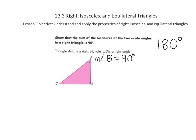When I use that notation, the M stands for the measure, and then this is the angle symbol, and then B for the angle. So the measure of angle B is equal to 90 degrees. We know, because the total of the angles in a triangle is equal to 180 degrees, that the measure of angle A plus the measure of angle B plus the measure of angle C is equal to 180 degrees.